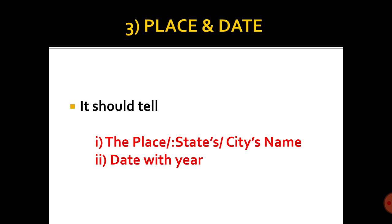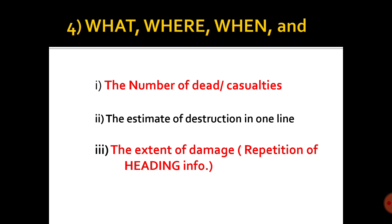The third point: leave a line and to the very left, before the body of the report, write the place and the date. Remember, the place should be the city or the actual district where the accident occurred. Put a comma and write the date with year as well.